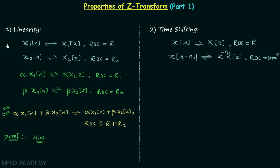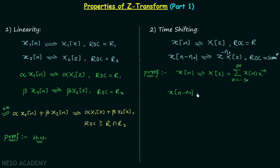Now we will prove the time shifting property. We know that X(z) = Σ(n=−∞ to ∞) x[n]·z^(−n). We are performing the time shifting by n0, so we have a new signal x[n−n0] with Z-transform equal to Σ(n=−∞ to ∞) x[n−n0]·z^(−n). Now let's substitute m = n−n0, which implies n = n0 + m.